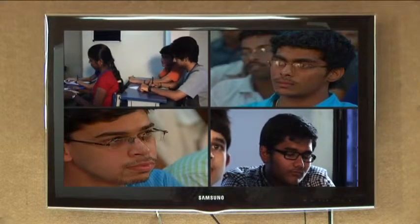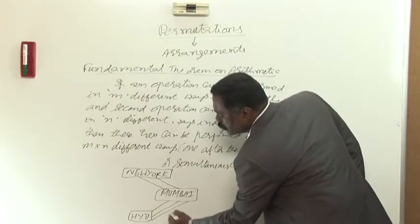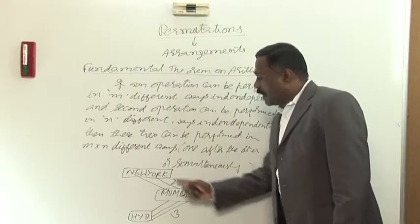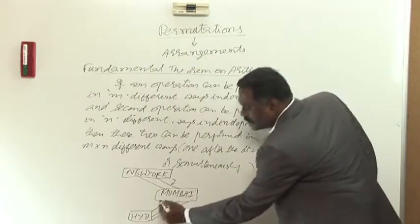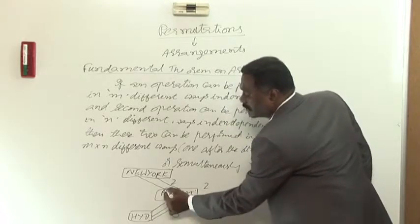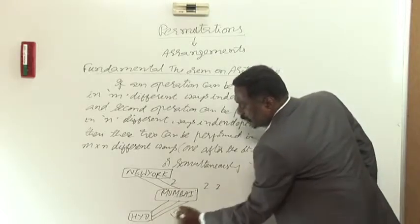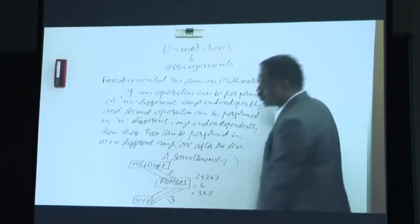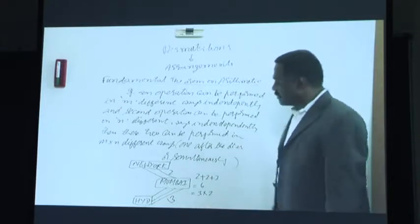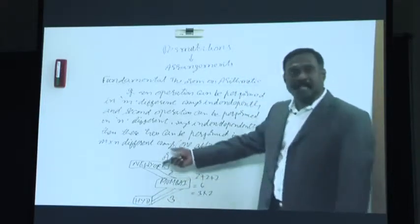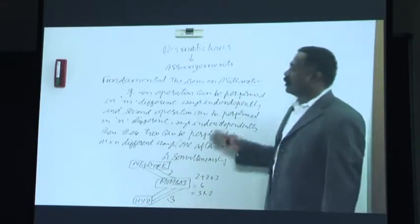A person wants to travel from Hyderabad to Mumbai and then to New York. There are three ways to go from Hyderabad to Mumbai, and from Mumbai to New York there are two ways. In how many ways can the person travel from Hyderabad to New York via Mumbai? If he starts on the roadway, he can move to New York in two different ways. Similarly, by railway he has two ways, and by airway again two ways. Added together, it is two plus two plus two, which is six — and six is nothing but three into two. So the first operation can be performed in three ways and the second in two ways, and together one after the other or simultaneously they can be performed in three into two different ways. That's what the definition states.